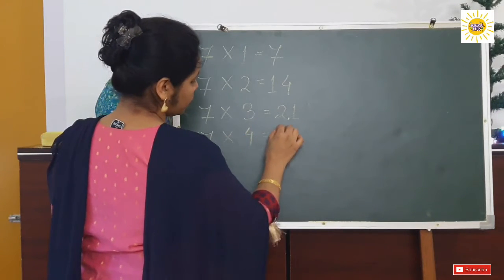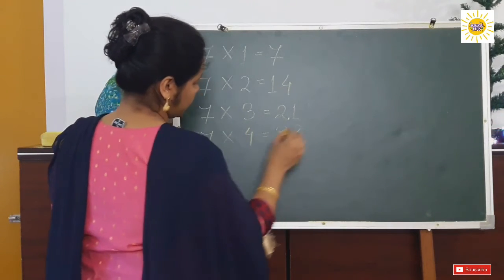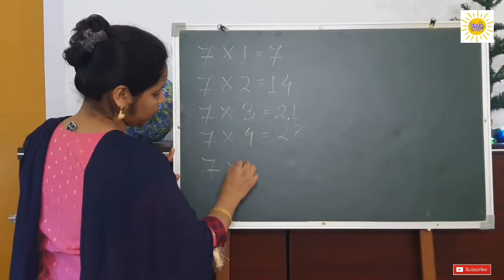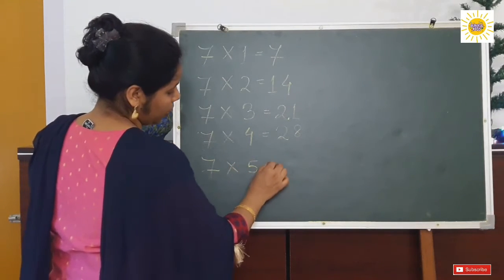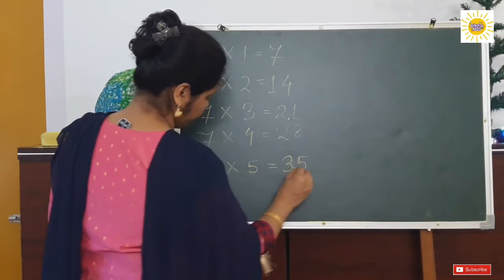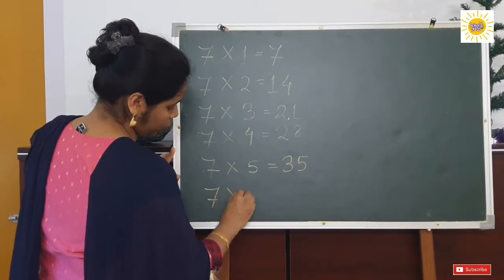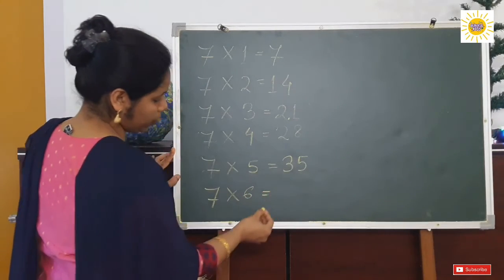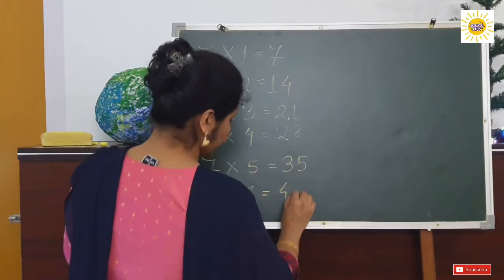7 into 5 equals to 35. 7 into 6 equals to 42.